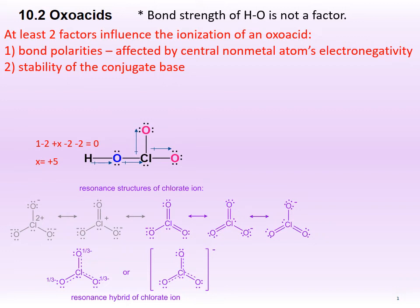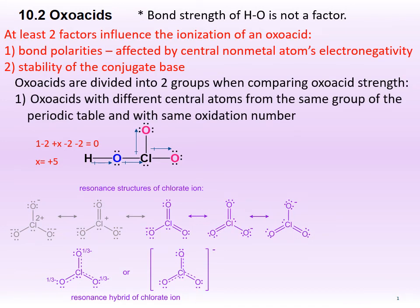Thus, chloric acid is very willing to lose its H⁺, as it looks forward to becoming its stable conjugate base. Not all oxoacids are as acidic as chloric acid, though — some are very acidic while others are less so. To compare oxoacid strength, it is convenient to divide the oxoacids into two groups. We will start with the first group: oxoacids with different central atoms, but from the same group of the periodic table, and with the same oxidation number. For example, let's compare chloric acid, HClO₃, with bromic acid, HBrO₃. Chloric acid is a stronger acid than bromic acid.